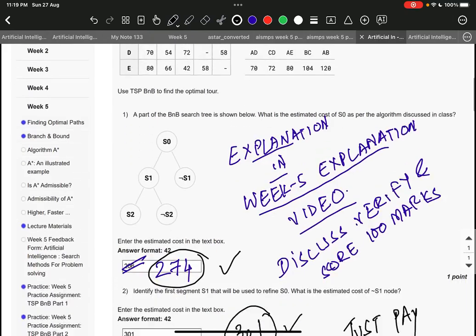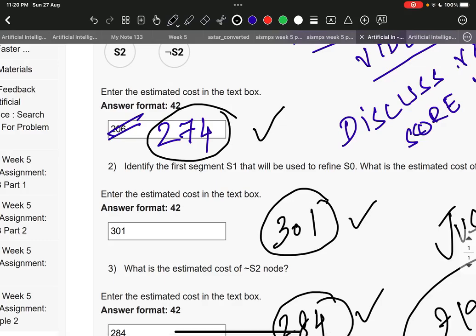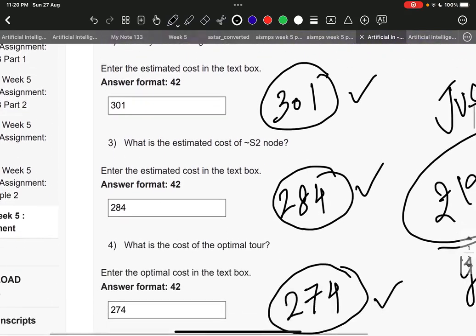The right answer to question number 1 is 274, question 2 is 301, question 3 is 284.